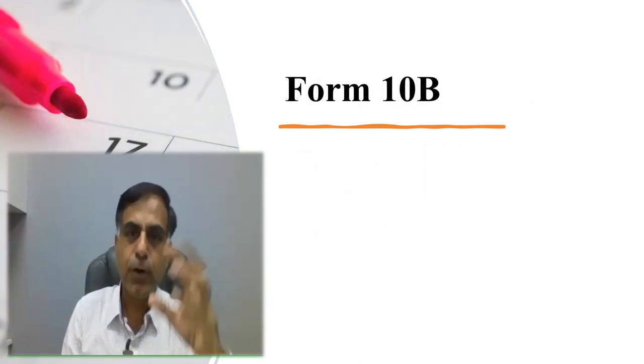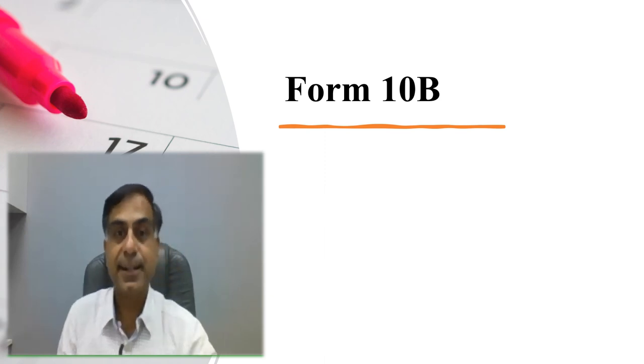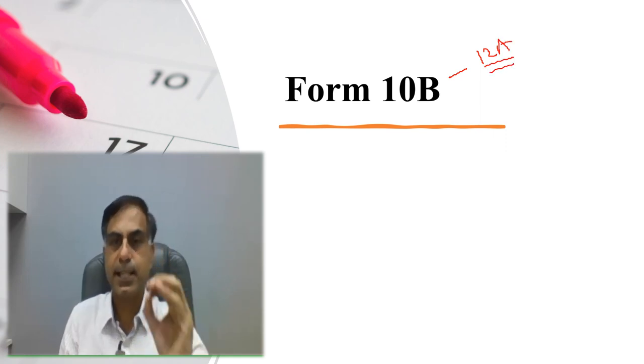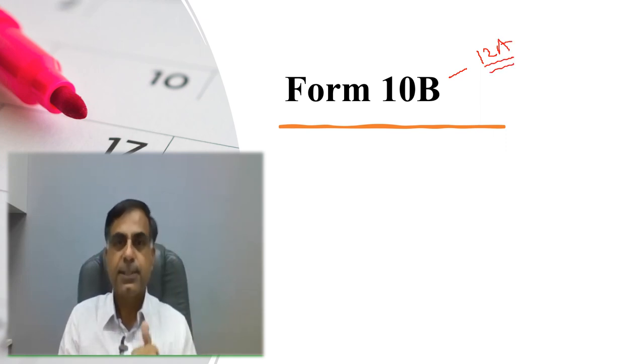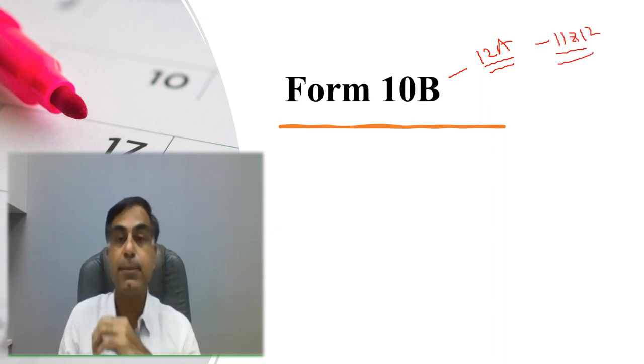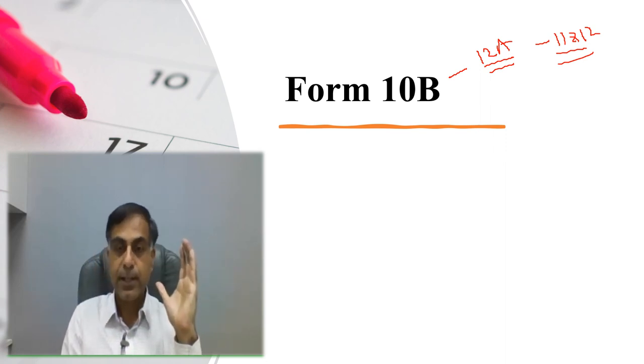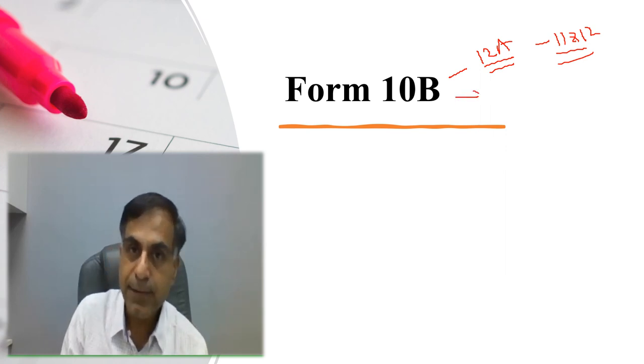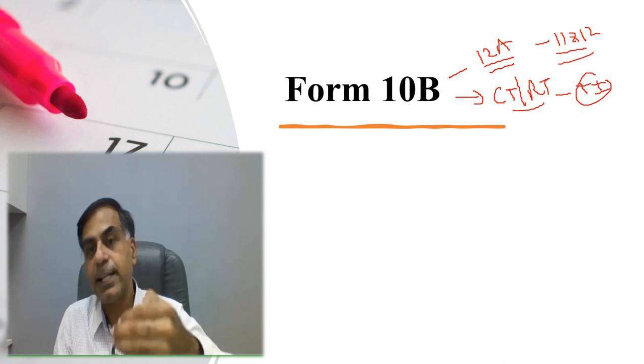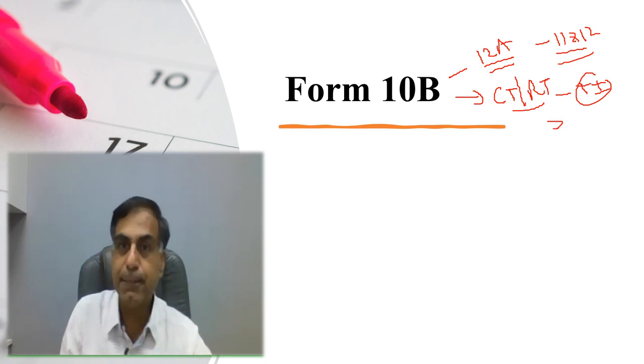Let me begin with form 10B. Form 10B gets the color from the applicability of the provisions of section 12A of Income Tax Act 1961. This section 12A is very clear when it says that the provisions of section 11 and 12 can't be claimed unless certain conditions are fulfilled. One of the important conditions of claiming 11 and 12 is that, if as a charitable trust or as a religious trust, your total income without considering the exemption of section 11 and 12 exceeds the basic exemption limit which is presently 2.5 lakh rupees, you are liable to get your books audited.